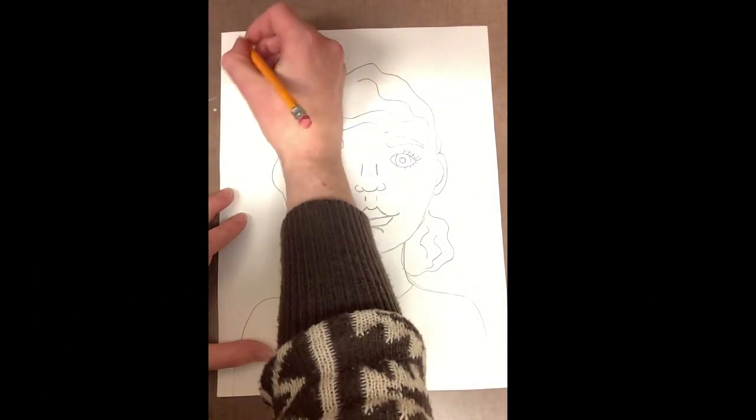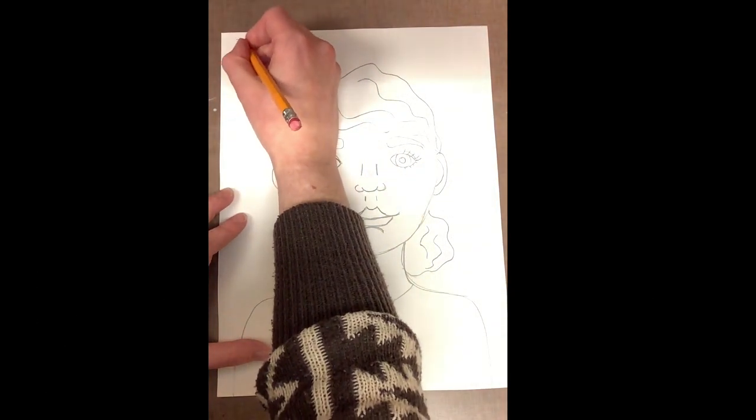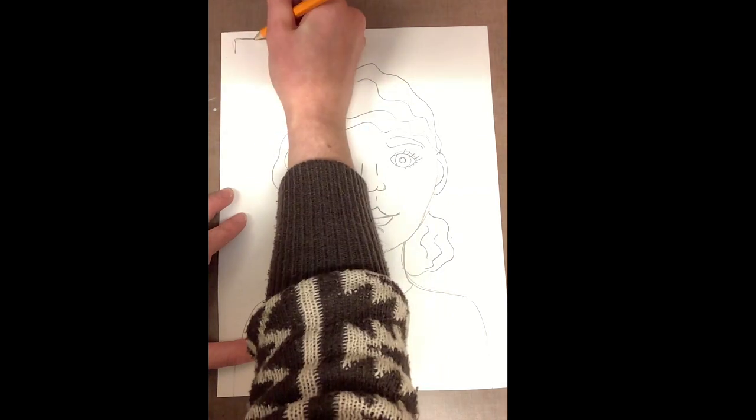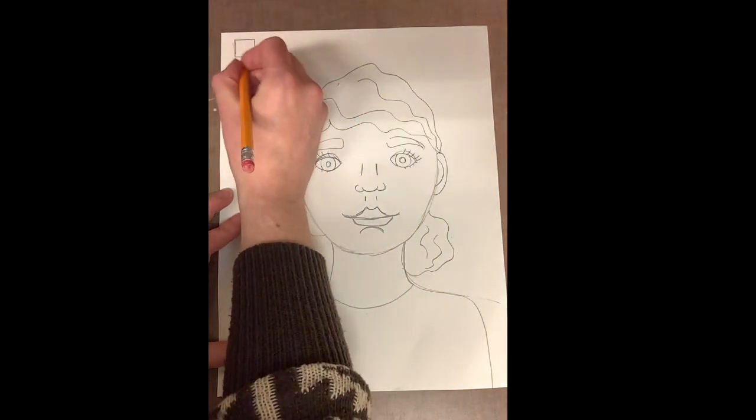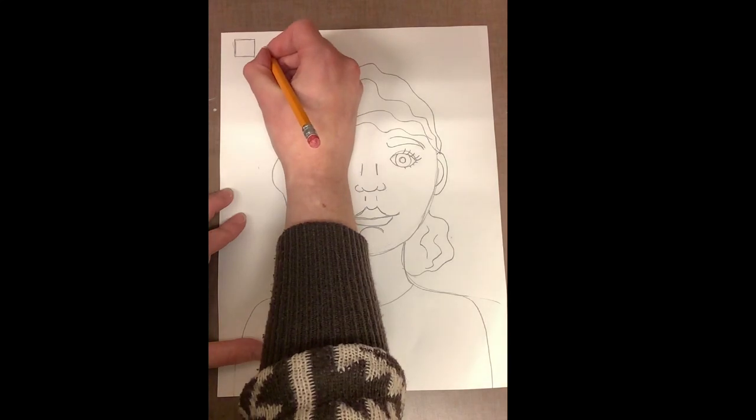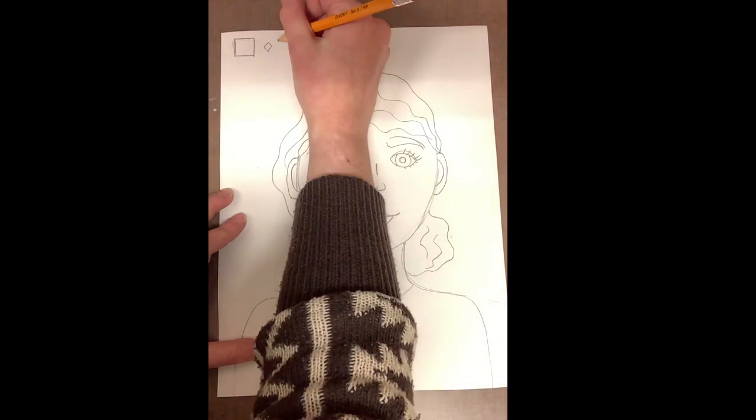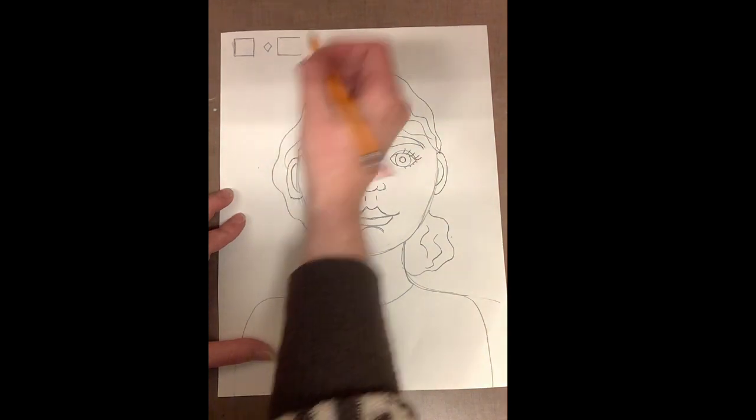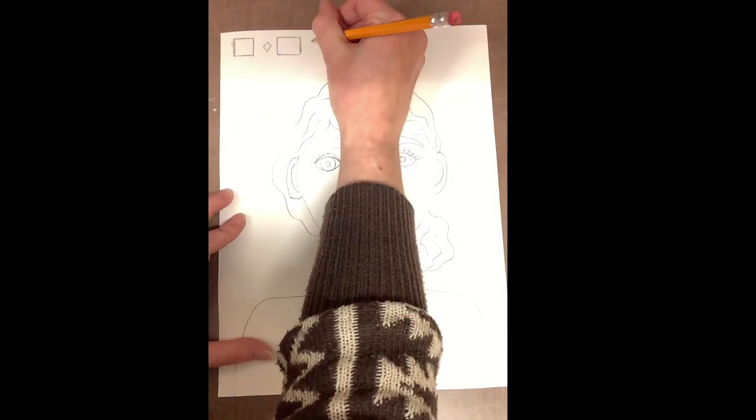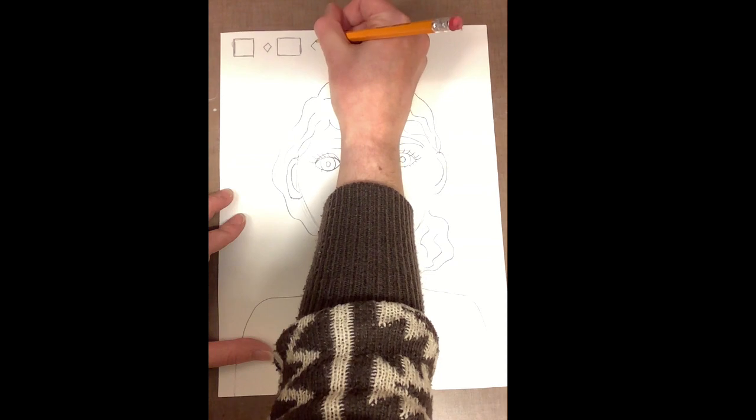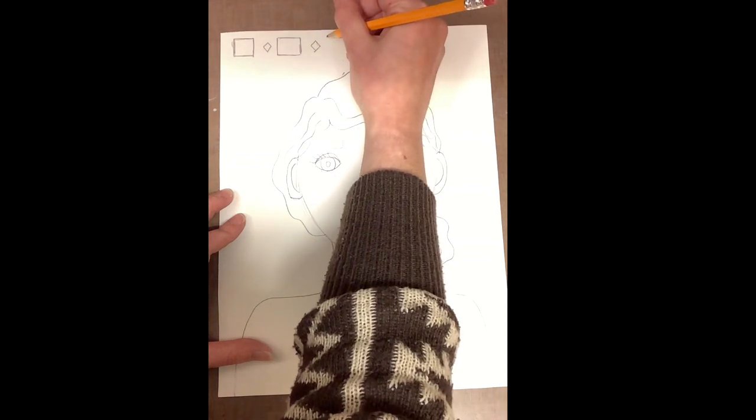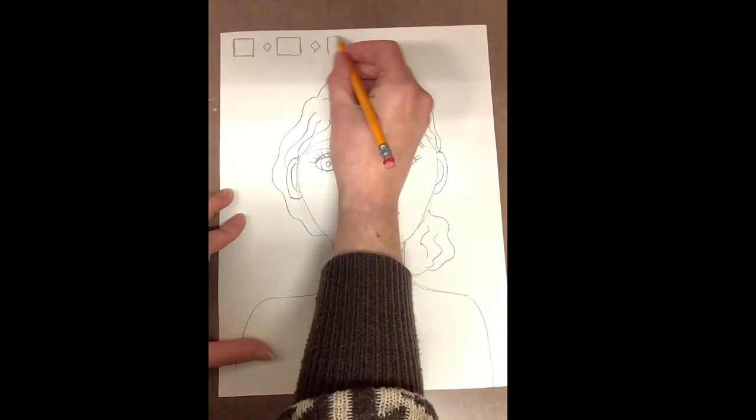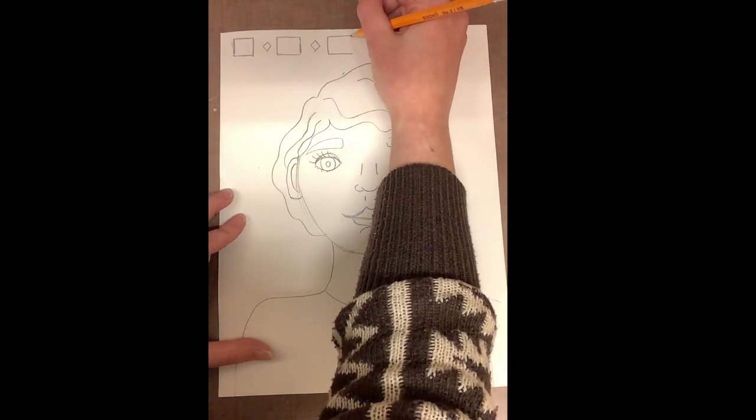My portrait is finished, so now I can begin to create my patterned border or frame around my portrait. Remember, a pattern is two different things that are repeating each other. So for example here, I have a square and a diamond shape, then square, then diamond shape. If I just did all squares or all diamonds, it's no longer a pattern. So make sure you have two different things that you're repeating for your pattern.